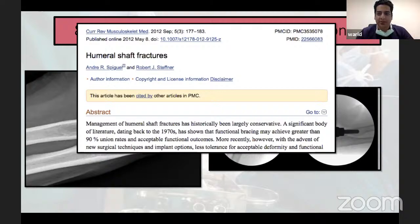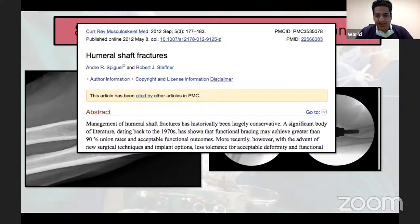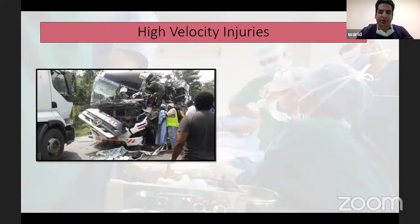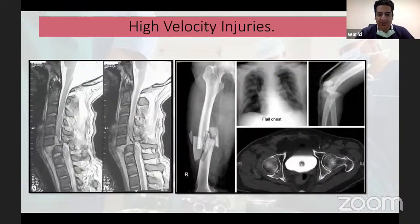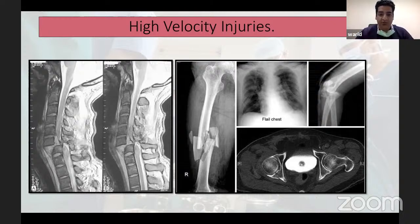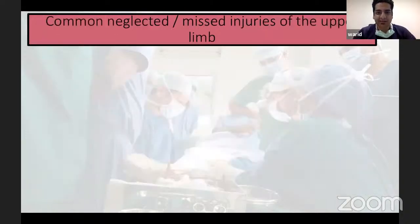As taught in ATLS programs: after primary survey and resuscitation, once the patient is hemodynamically stable, a senior resident or registrar should perform a secondary survey, carefully examining all extremities. Even if patients are on a ventilator, once stable they should be fully examined. A second skeletal survey should be done to look for these injuries. If diagnosed on time, the problem can be prevented. In high-velocity injuries — spinal cord injury, flail chest trauma, long bone fractures — our focus goes on those, and we tend to miss hand and elbow injuries, especially while stabilizing the patient.